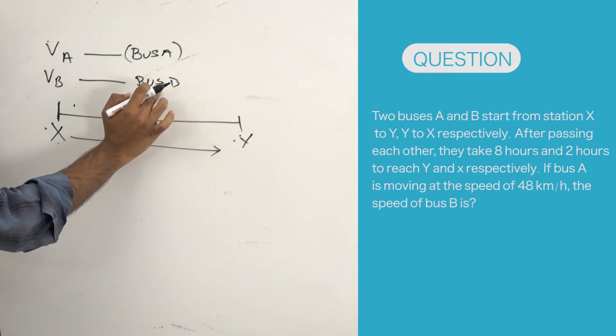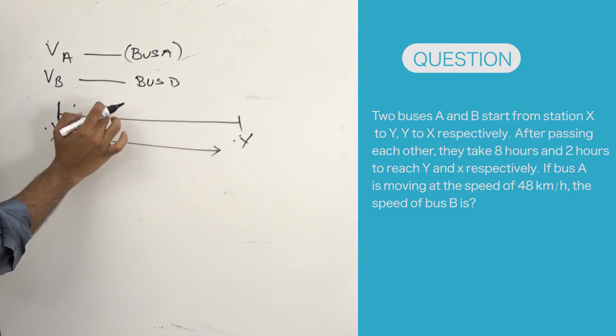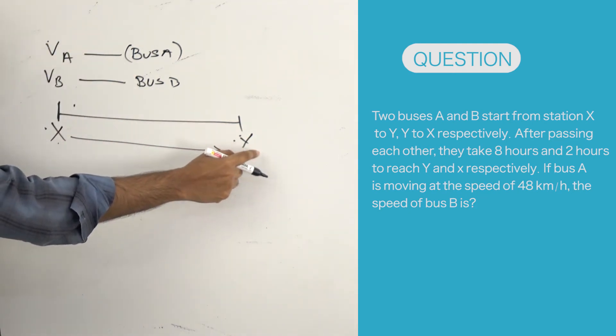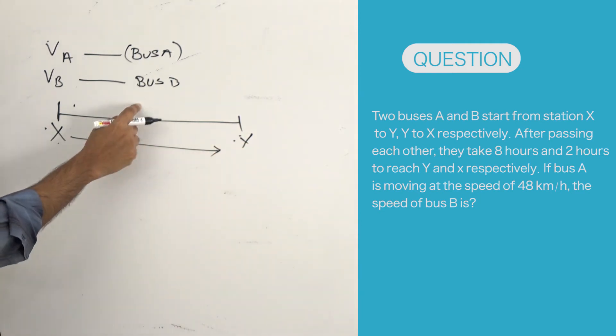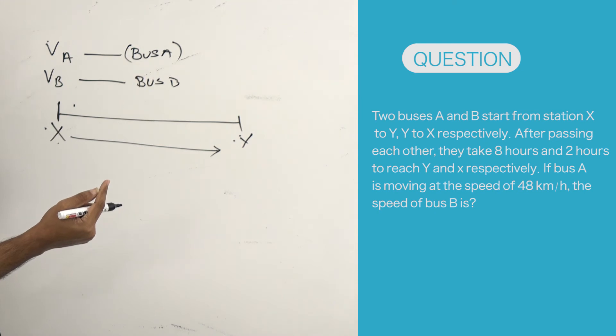If the speed of bus B is higher, they will meet at a point closer to X. Here, what he mentioned is after crossing each other, the time taken for bus A to reach Y is 8 hours, whereas bus B takes 2 hours. That means they met at a point closer to X.